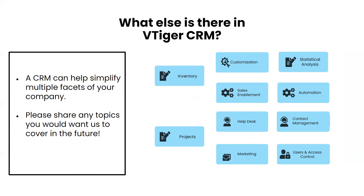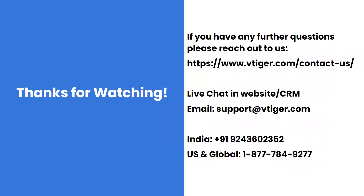That's a breakdown of the features available to you as a sales rep in vTiger. A CRM helps simplify multiple aspects of your company and your life as a salesperson, and there's much more we haven't covered — customization, inventory, projects, help desk, and marketing features. We'd love to hear topics you'd like covered in future webinars. You can reach us via live chat on our website or in the CRM, email us at support@vtiger.com, or call us directly. Thanks for watching.